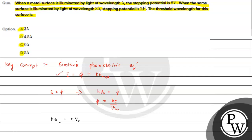We have two conditions given. First, when the surface is illuminated by light of wavelength lambda, the stopping potential is 8 volt. So we can write: eV₀ equals hc over lambda minus hc over lambda naught, giving us 8e equals hc over lambda minus hc over lambda naught. This is expression number 1.